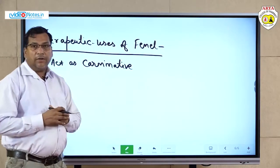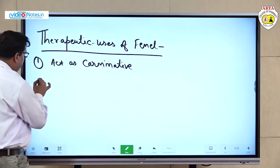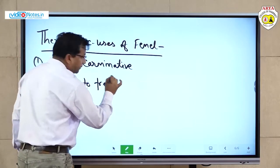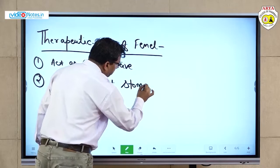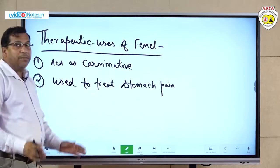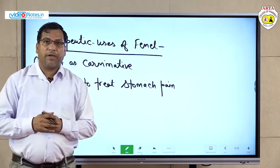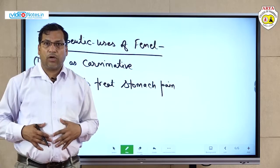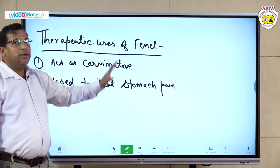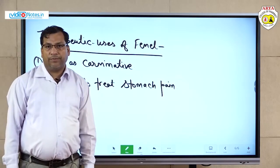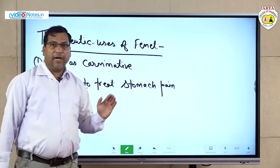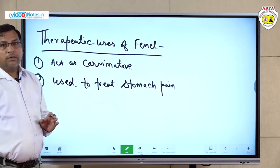Similarly, fennel is also used as a stomachic — used to treat stomach pain. If a person is suffering from stomach pain, herbal preparations containing fennel extract, including phellandrene, act on stomach pain.